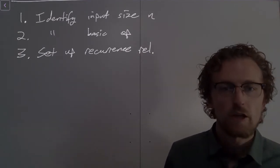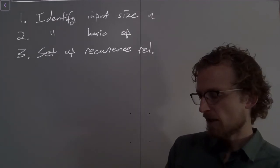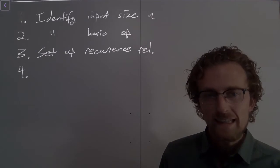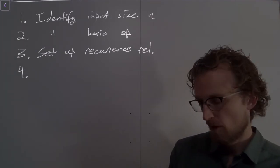assume that the recurrence relation is given to you and then compute step four, which is you solve the recurrence relation, or at least you determine its order of growth.